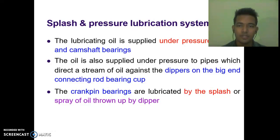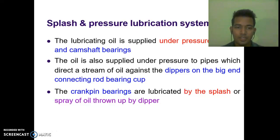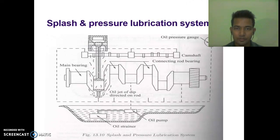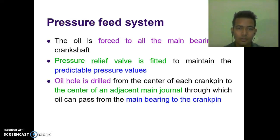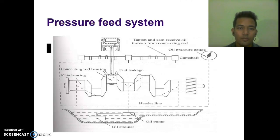In the splash and pressure lubricating system, lubricating oil is supplied under pressure to the main and camshaft bearings. The oil is also supplied under pressure to pipes which direct a stream of oil against the dippers on the big end and connecting rod bearing cup. The crankpin bearings are lubricated by the splash or spray of oil thrown by the dipper. Here you can see the splash and pressure lubrication system diagram. In the pressure feed system, oil is forced to all main bearings of the crankshaft. A pressure relief valve is fitted to maintain a predictable pressure value. Oil holes are drilled from the center of each crankpin to the center of an adjacent main journal, through which oil passes from the main bearing to the crankpin. Here is the diagram of the pressure feed system.